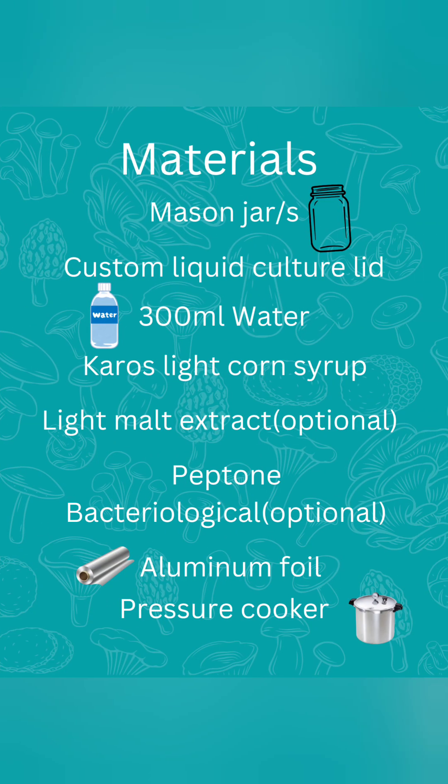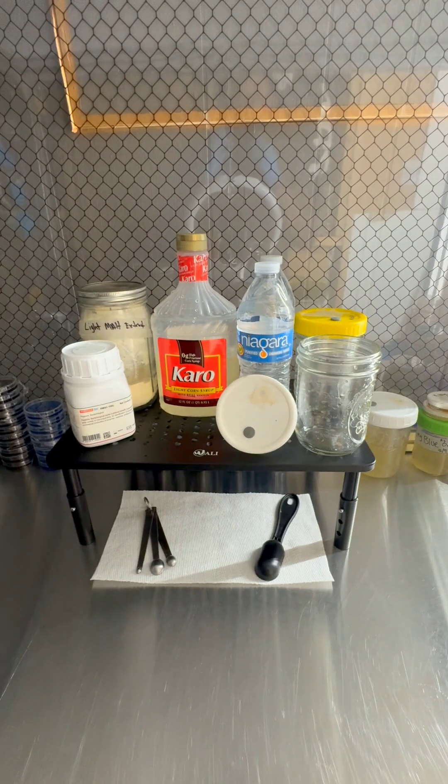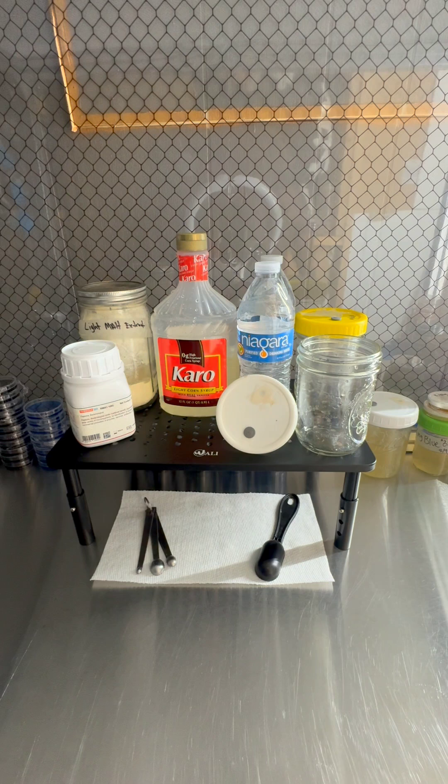To get started, you'll need a mason jar, a custom liquid culture lid, 300 milliliters of water, Karo's light corn syrup, light malt extract (optional), peptone bacteriological (optional), aluminum foil, and a pressure cooker.